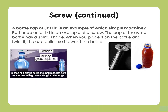A bottle cap or jar lid is an example of the simple machine screw. The cap of a water bottle has a spiral shape — when you place it on the bottle and twist it, the cap pulls itself towards the bottle.